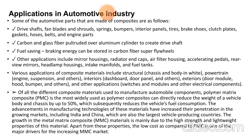Various applications of composite materials include structural chassis and body, powertrain, engine suspension, and other interiors such as dashboard and door panels, exterior door motors, hood, bumper, switch modules, and other electrical components. Of all the composite materials used to manufacture automobile components, polymer matrix composites are most widely used, as they can directly reduce the weight of the vehicle body and chassis by up to 50 percent, subsequently reducing fuel consumption.